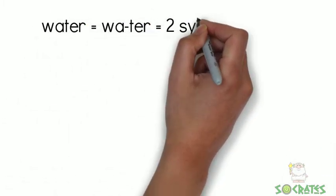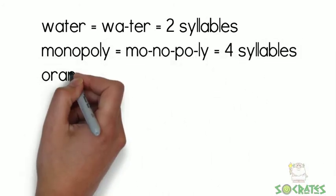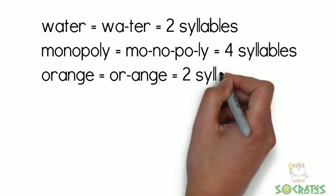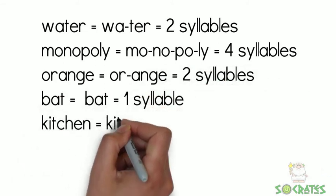Water, wa-ter, it's two syllables. Monopoly, mo-no-po-lee, four syllables. Orange, or-en-ge, two syllables. Bat, one syllable. And kitchen, two syllables.